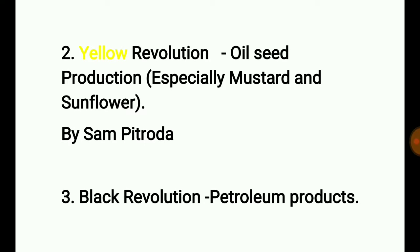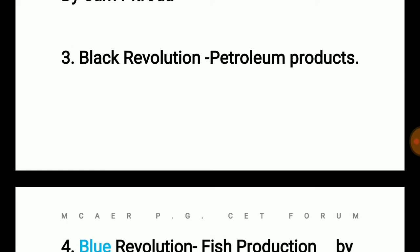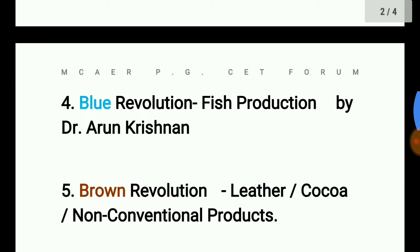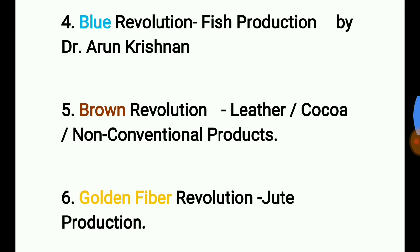The Yellow Revolution covers especially mustard and sunflower, and was coined by Sam Pitroda. The third is the Black Revolution, which is for petroleum products. Your task is to comment below who coined this term. The fourth is the Blue Revolution — it is for fish production, by Dr. Arun Krishnan.